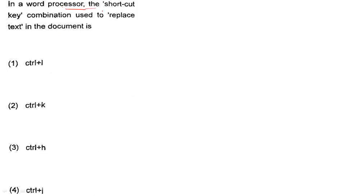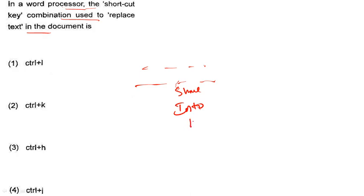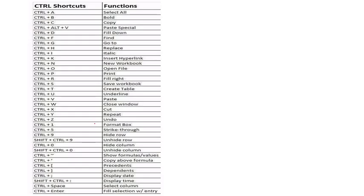Next: In a word processor, the shortcut key combination used to replace text in the document — you can type Control+H to open the find and replace dialog. Control+H is the shortcut for replace. Also note: Control+K is for insert hyperlink, Control+I is for italic.